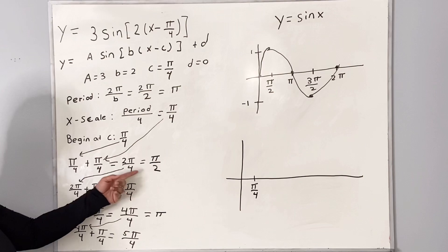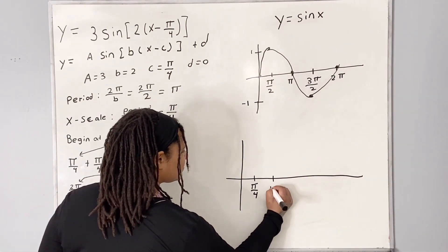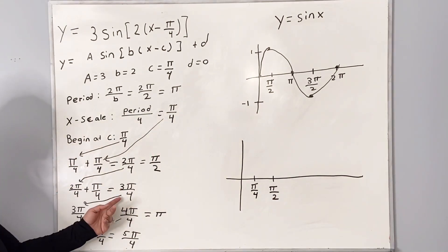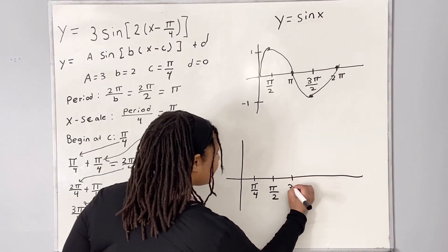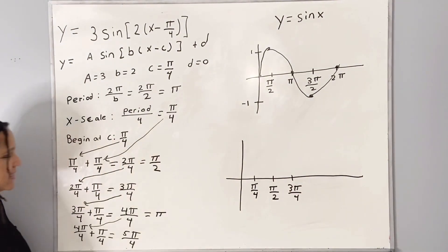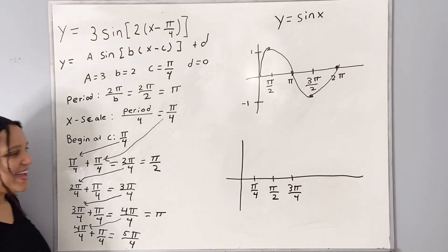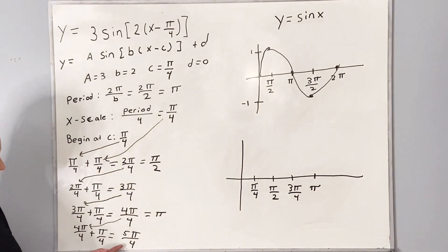My next increment will be pi over 2. My next increment will be 3 pi over 4. And our next increment will be pi. And our last one will be 5 pi over 4.